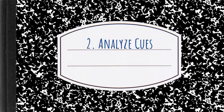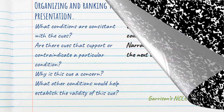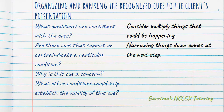After we get a picture of the cues, we want to analyze them. What does it mean to analyze cues? Analyzing cues is when you organize and link the recognized cues to the client's clinical presentation. You want to think: what conditions are consistent with the cues? Are there cues that support or contraindicate a particular condition? Why is this particular cue a concern? What other information would help establish the validity of a cue? You want to consider multiple things that could be happening in the question. Narrowing down specific items comes in the next step.